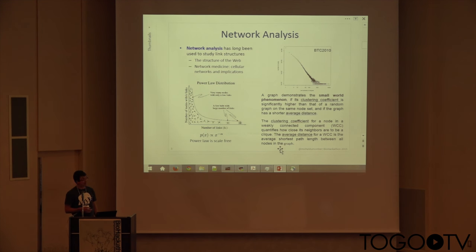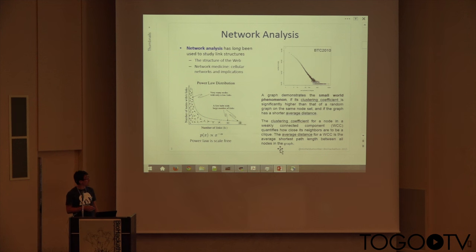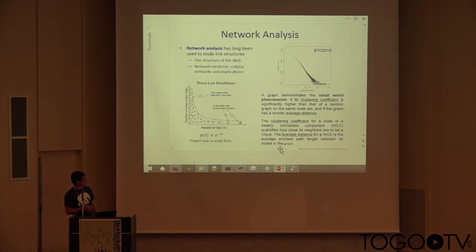The small world phenomenon means you have a clustering coefficient which is significantly higher than what you would expect from random, and also that the graph has a shorter average distance. The clustering coefficient for a node in a weakly connected component quantifies how close its neighbors are in the clique, and the average distance is the average shortest path length between all nodes in the graph.